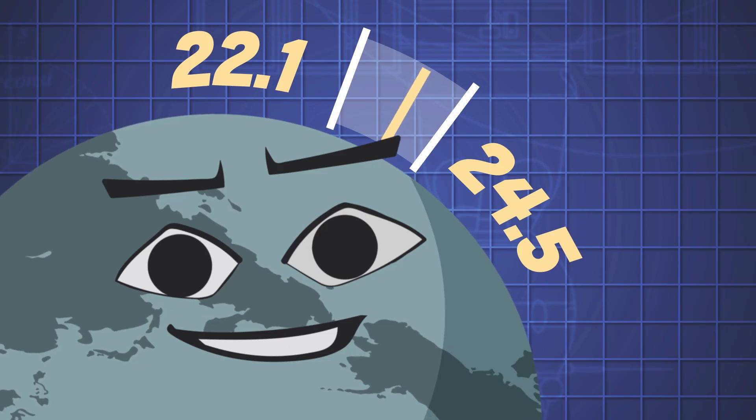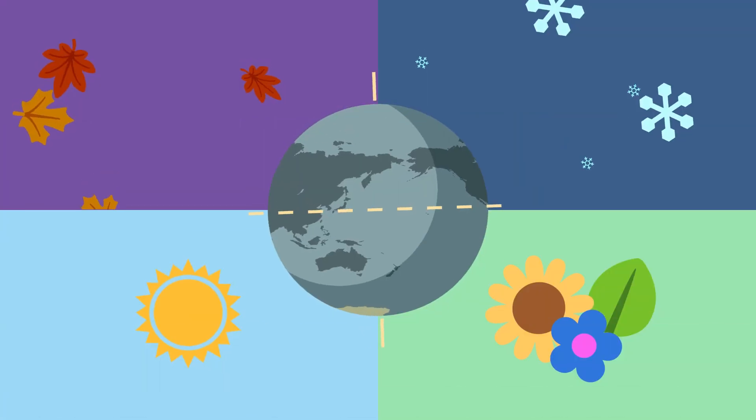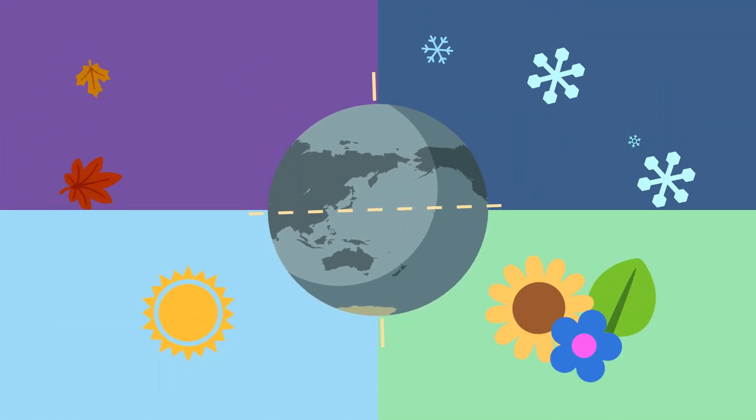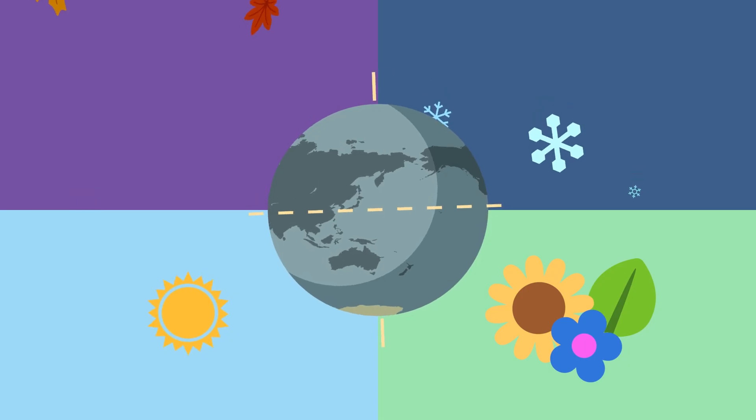As obliquity decreases, it gradually helps make milder seasons, increasing ice cover at high latitudes to help reflect the Sun's energy.